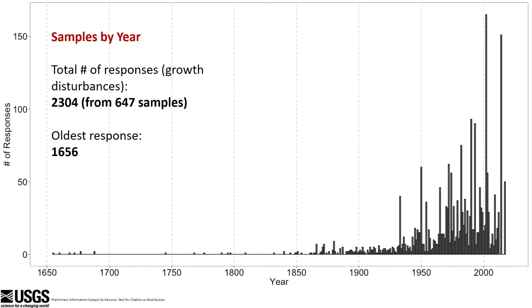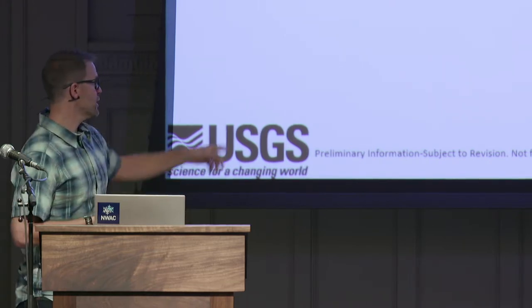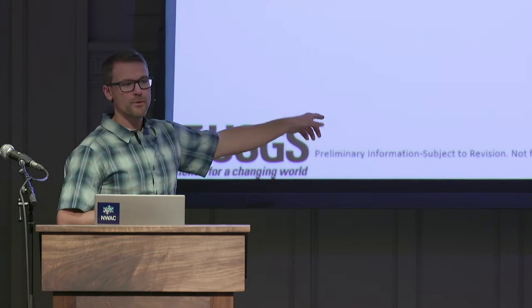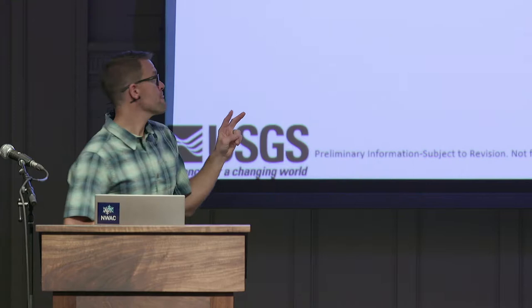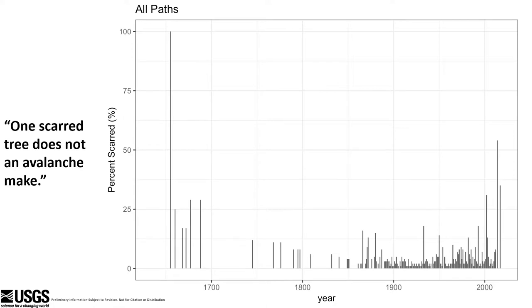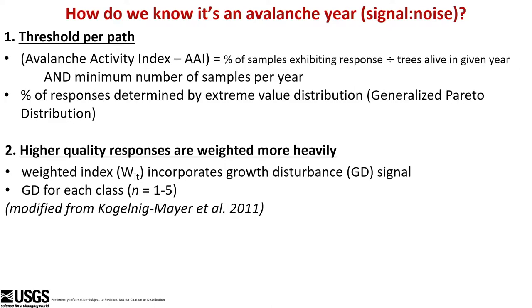That's the problem with using tree rings to look at avalanches: the avalanche likes to take out the tree, so we're losing data by studying the very phenomenon we want to study. But there are ways to get around that. One is we look at just the percentage of trees that are scarred from that year. When we go back to really old samples, we might have one or two samples from, say, 1650, but 100% of those samples are scarred. The problem is: is it an avalanche if we only have one sample, or is it that pesky moose that survived since 1650? One scarred tree does not an avalanche make — we have to get through the signal versus the noise.